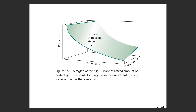Everywhere along the surface, you have a state that satisfies the perfect gas equation of state. The surface denotes equilibrium combinations of pressure, volume, and temperature. Any point in space not on that surface is not an equilibrium state of a perfect gas.